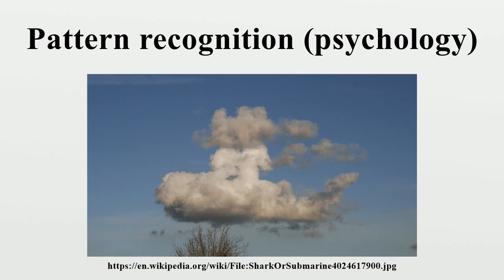False pattern recognition: the human tendency to see patterns that do not actually exist is called apophenia. Examples of apophenia include the man in the moon, faces or figures in shadows, clouds and in patterns with no deliberate design, such as the swirls on a baked confection, and the perception of causal relationships between events which are, in fact, unrelated.